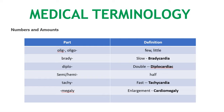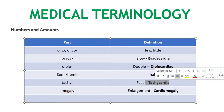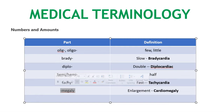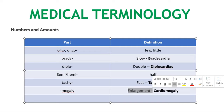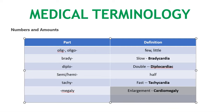Semi means half. Tachy means fast — tachycardia means a fast resting heartbeat, over 100 beats per minute in adults. -Megaly means enlargement — cardiomegaly means enlargement of the heart.